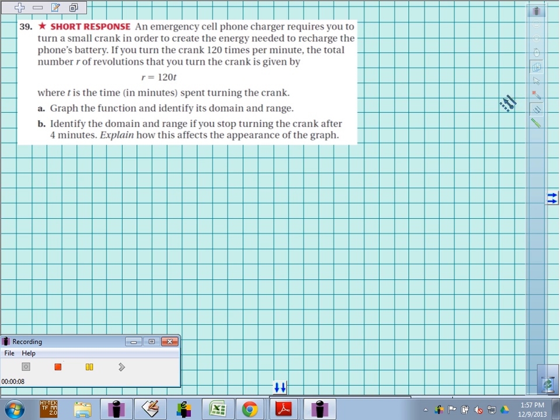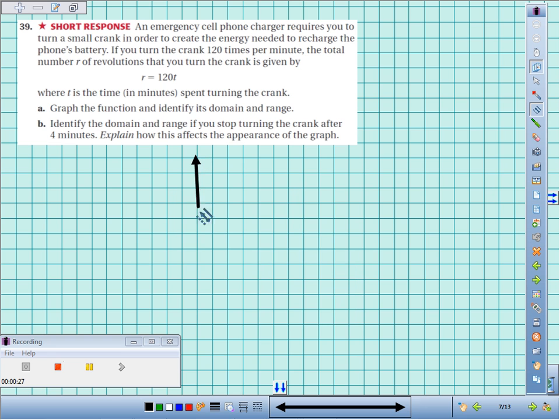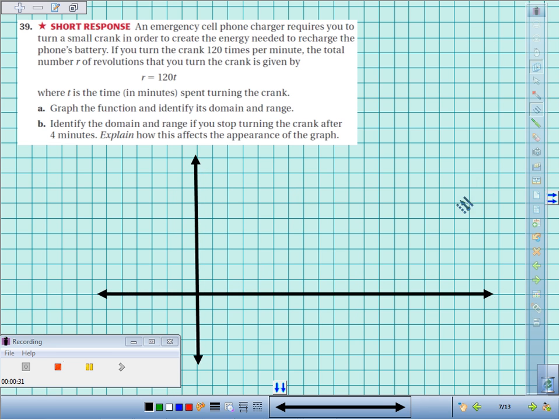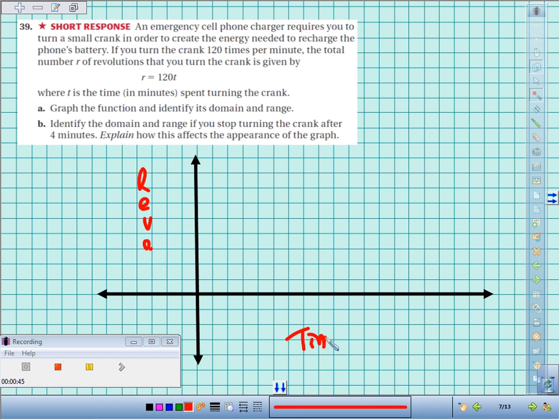Let's graph the function and identify the domain and range. I'm not going to have negative cranks, negative revolutions, or negative minutes, so I'm going to focus on quadrant one. The dependent variable, the number of revolutions, would go on my y-axis, and the control variable, time, goes on the x-axis. The number of revolutions depends on how many minutes go by.